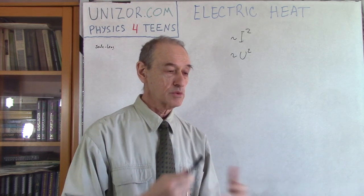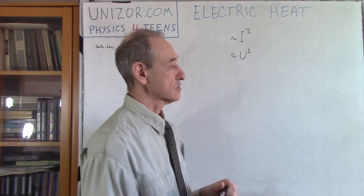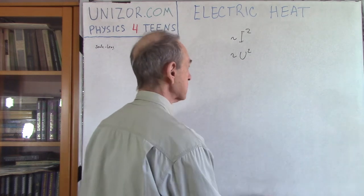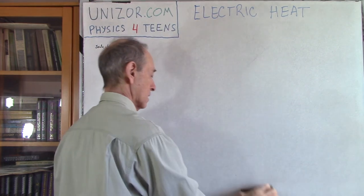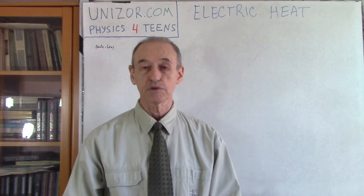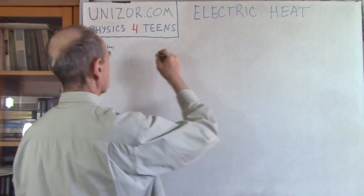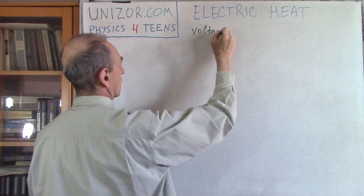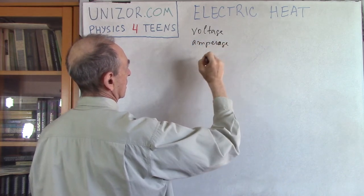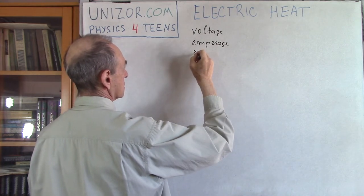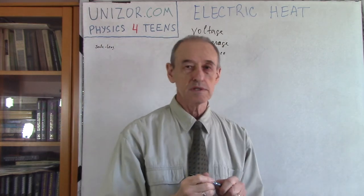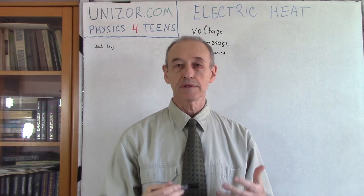Let me do some theoretical calculations to explain all these experimental facts, starting from the definitions of the electric characteristics we know: voltage, amperage, and resistance. These three characteristics are very important and they define the circuit.